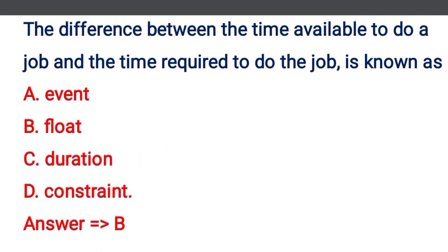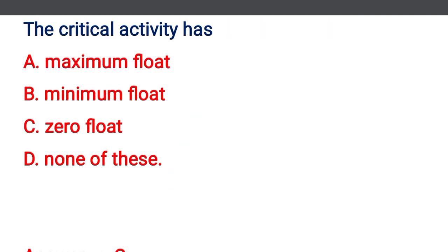Next question: the difference between the time available to do a job and the time required to do the job is known as — option A: event, option B: float, option C: duration, option D: constraint. The correct answer is option B: float. Next question: the critical activity has — option A: maximum float, option B: minimum float, option C: zero float, option D: none of the above. The correct answer is option C: zero float.